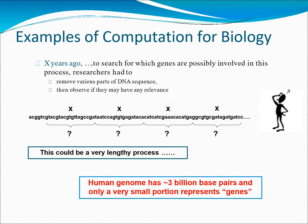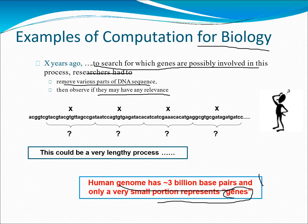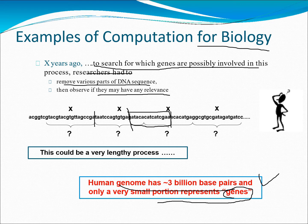Let's go through some examples of computation for biology. Some years ago, to search for which genes are possibly involved in a process, researchers had to remove spots of a DNA sequence and observe if they had any relevance — a massive process. The human genome has 3 billion base pairs, and only a very small portion represents genes. So researchers had to remove small parts of DNA and study each part, which was an enormous task back in the 1900s.